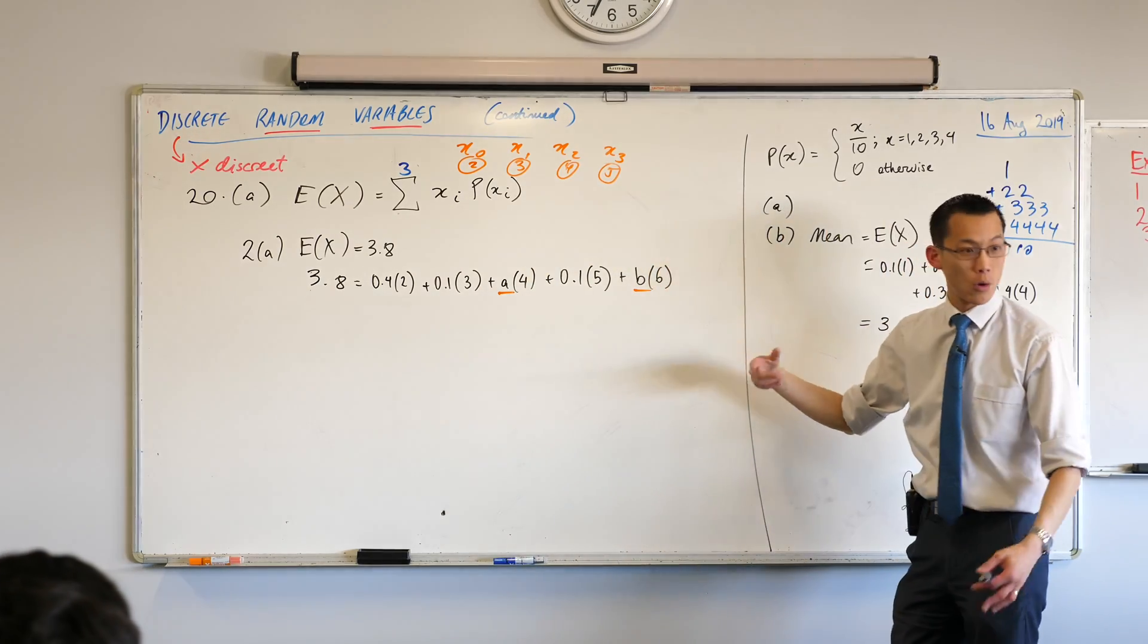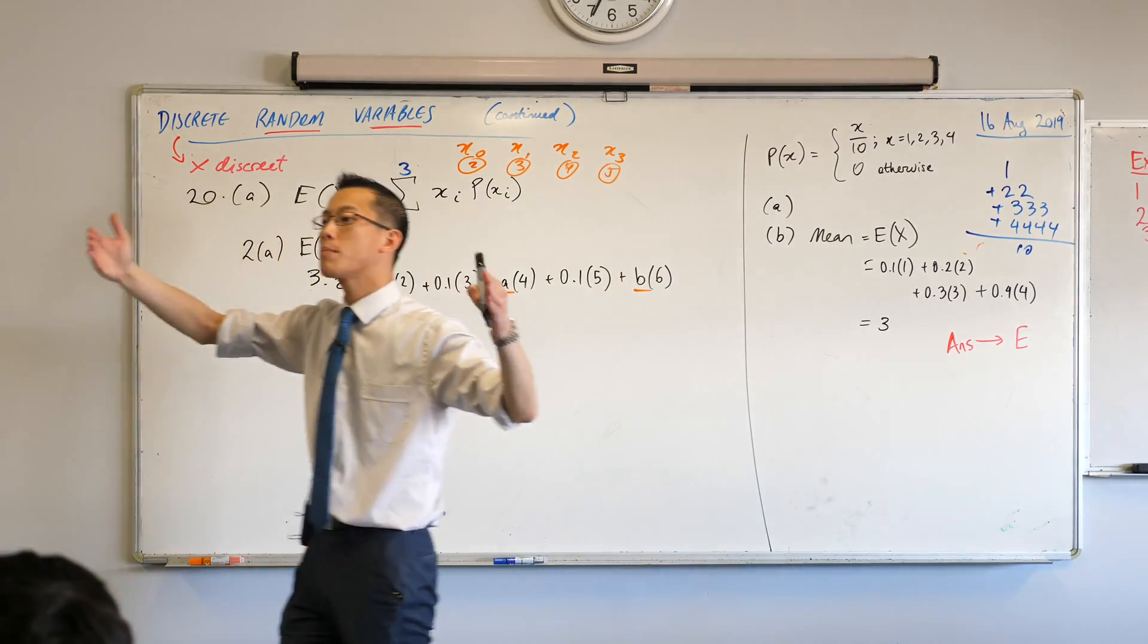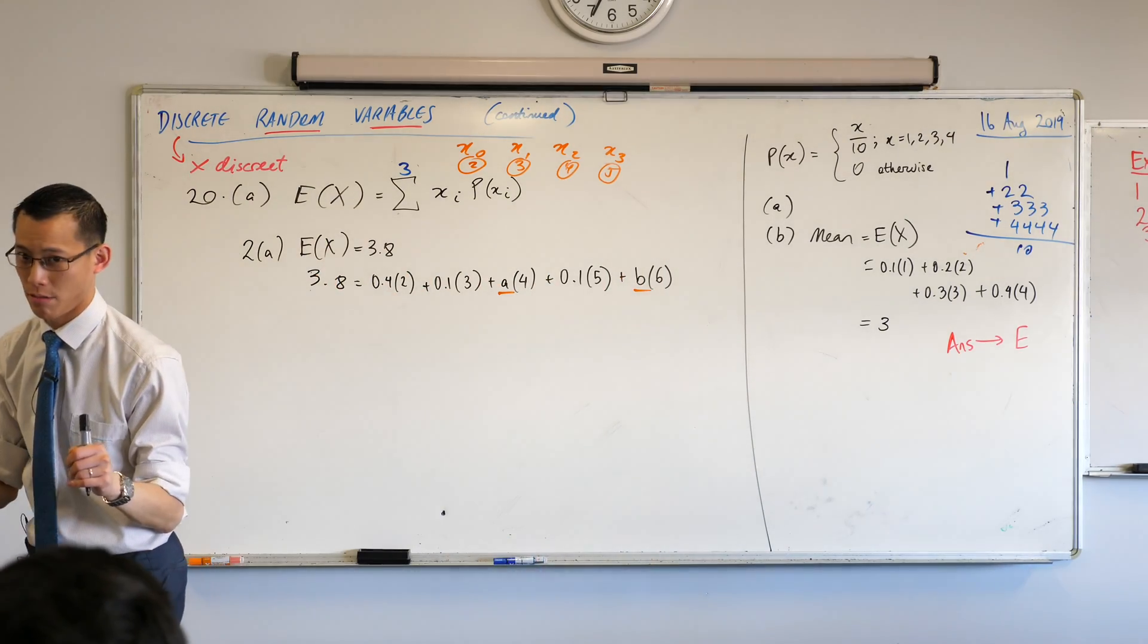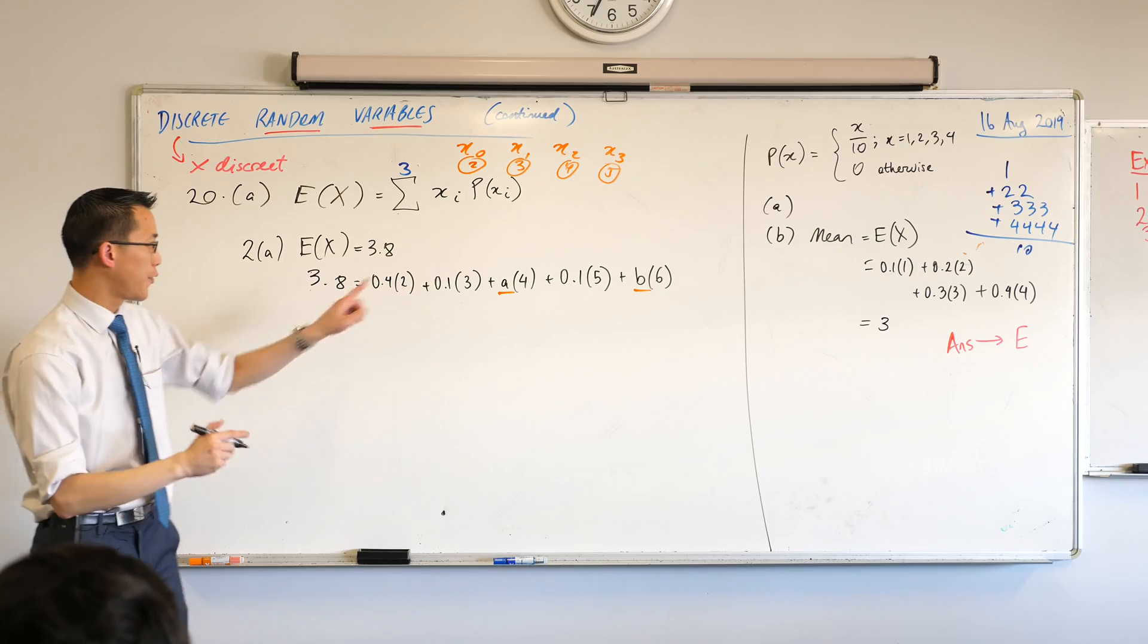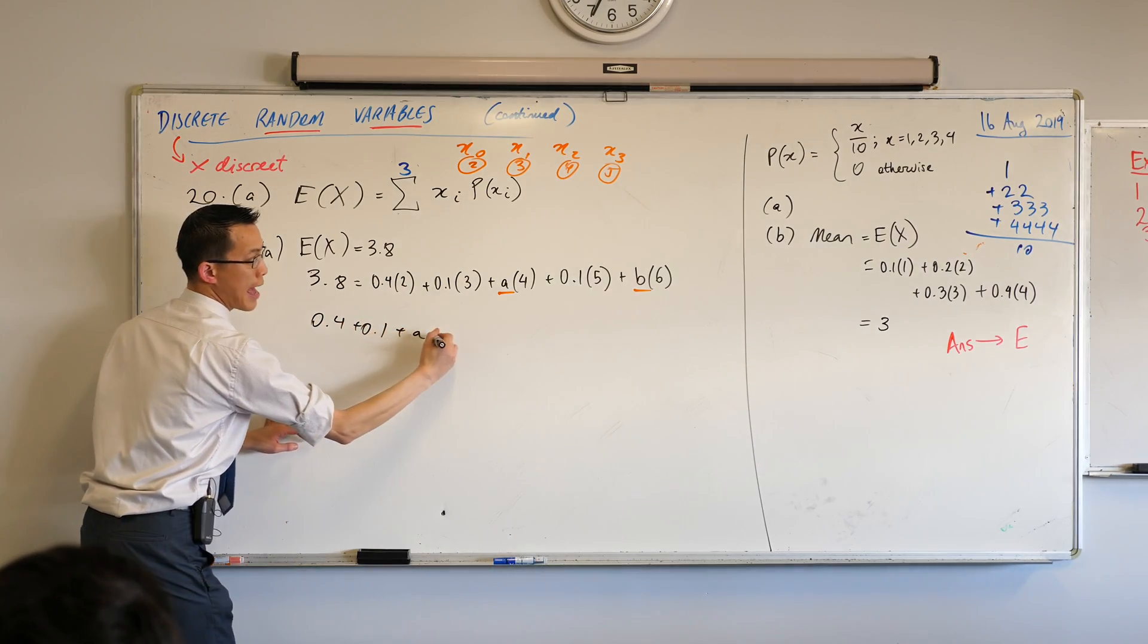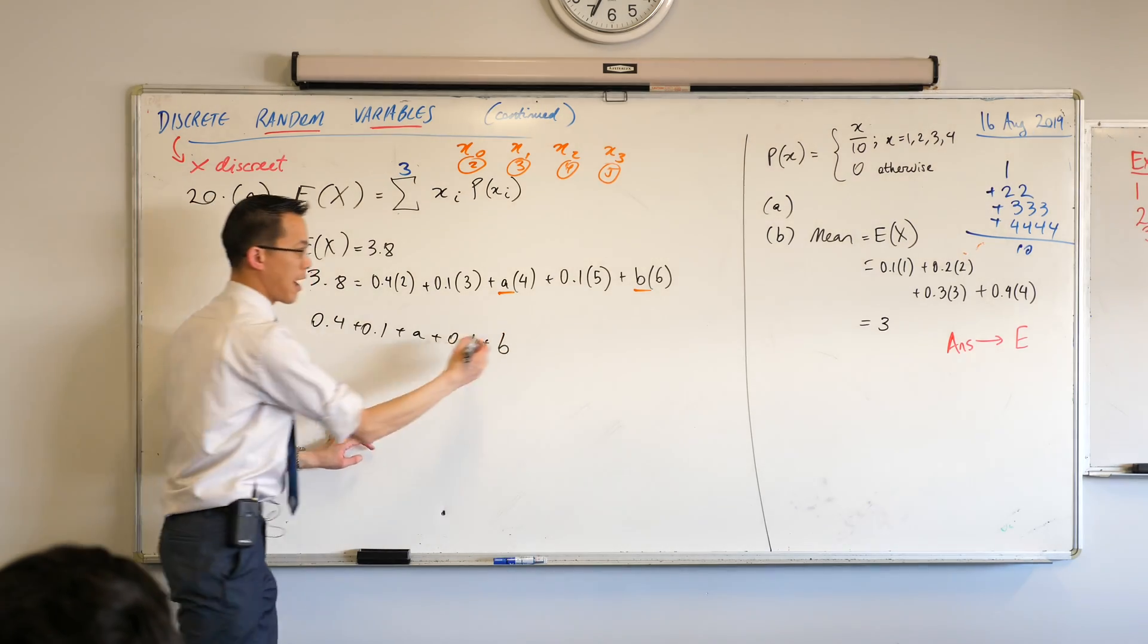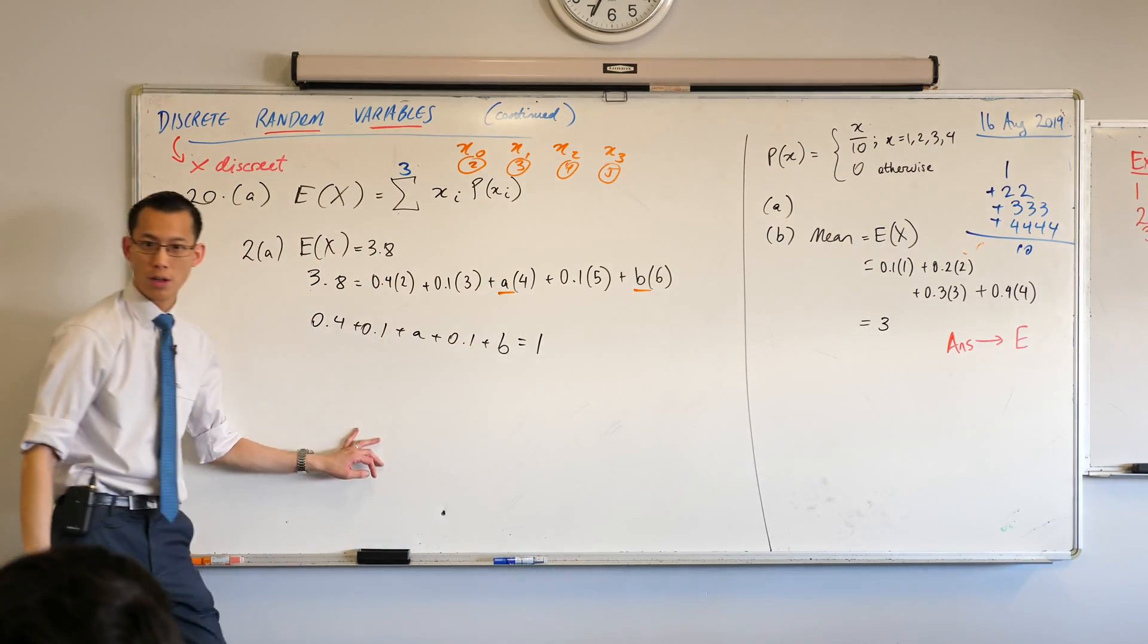So, A and B are also probabilities, right? When you get the whole distribution, what are the probabilities supposed to add up to? One, right? So, if I take the 0.4 and the 0.1 and the A and the other 0.1 and the B, when I add them all up, I should get a full one.